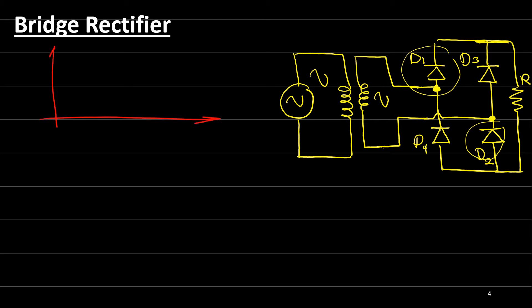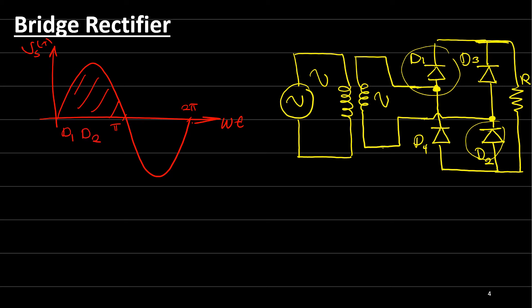The input Vs is a sine wave. During the positive half cycle, diode 1 and diode 2 conduct. The current flows through diode 1, through the load, and back through diode 2 to the source. The input voltage appears across the load during this first half cycle.